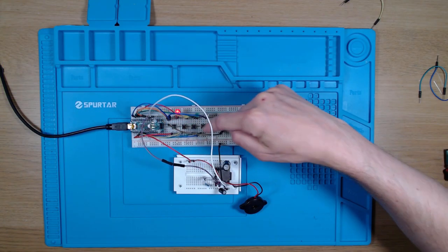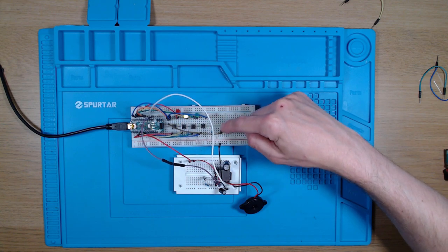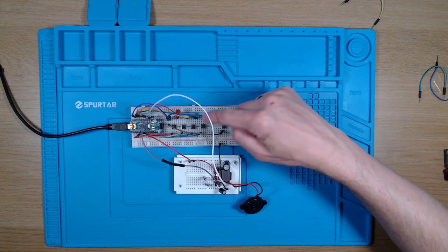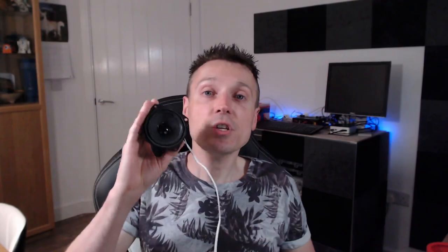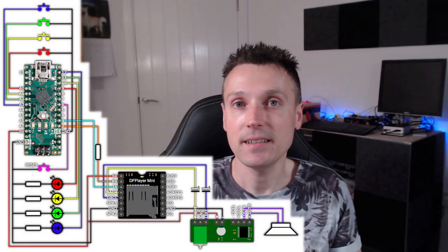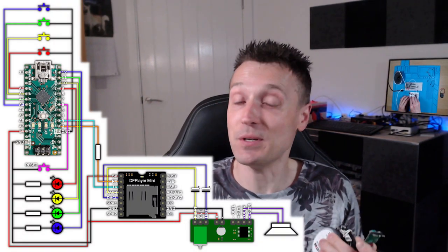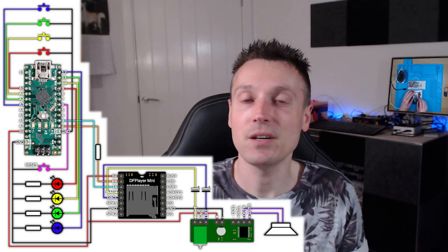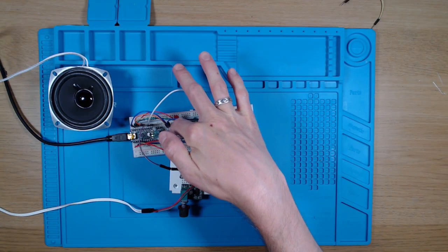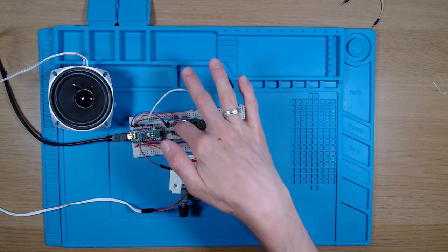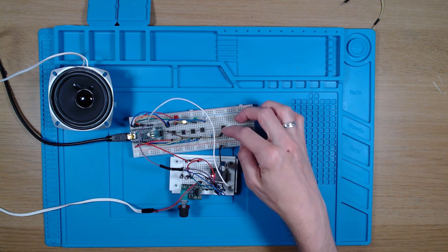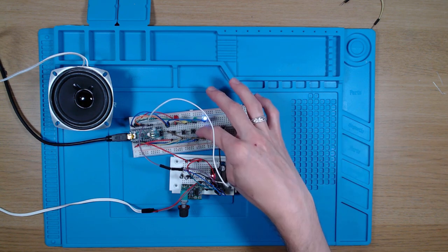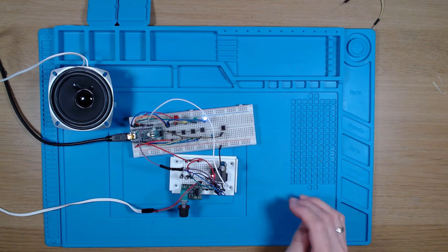Testing each button I'm straining to hear the sound — that little speaker is too quiet. Let's try a bigger one. To use a speaker like this we'll need an amp like this, and we'll connect it up like this. There's no need to make any code changes, which is brilliant, because this is all electrical connections. And as you can hear, that's much louder.